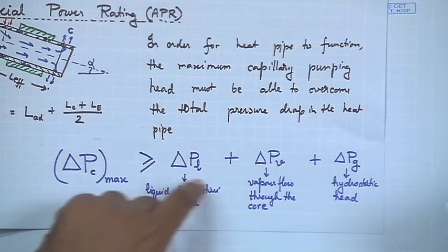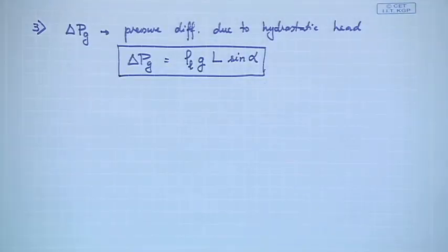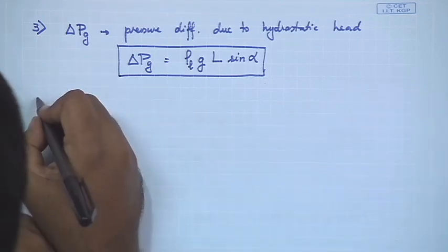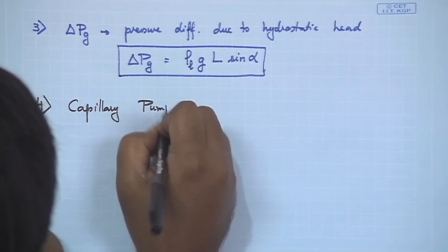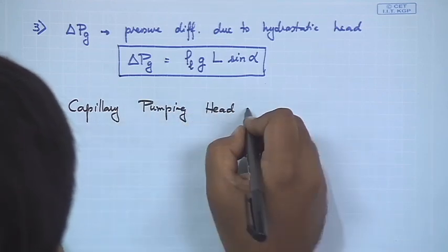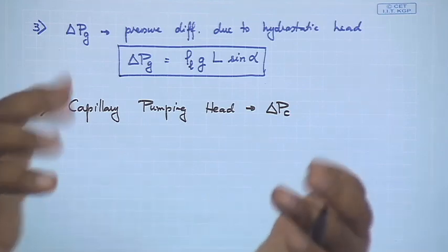We now have expressions for all three: ΔP_l, ΔP_v, and ΔP_g. What remains is the left-hand side — the capillary pumping head ΔP_c. The driving force in the wick is surface tension. Recalling from basic physics, ΔP = 2σ / r_c for a bubble.